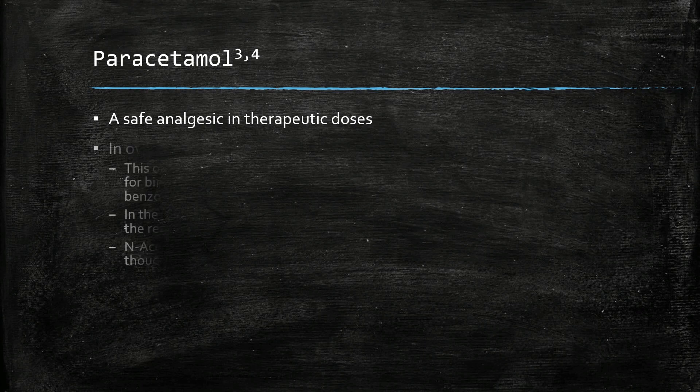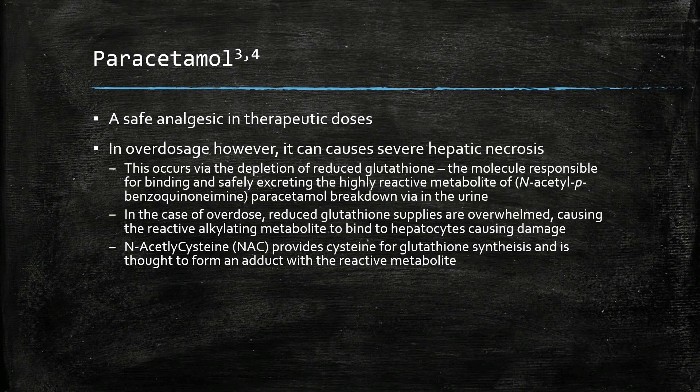This results from overwhelming the body's supply of reduced glutathione, a molecule which binds the highly reactive breakdown metabolite of paracetamol, N-acetyl-p-benzoquinoneimine (NAPQI). The metabolite thus damages hepatocytes. N-acetylcysteine, the remedy used for paracetamol overdose, acts because it provides cysteine for the synthesis of more glutathione and is thought to directly bind the reactive metabolite of paracetamol.